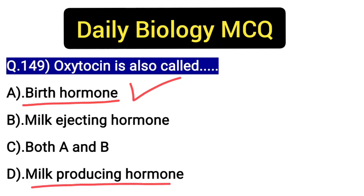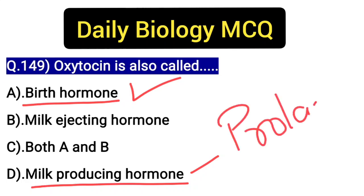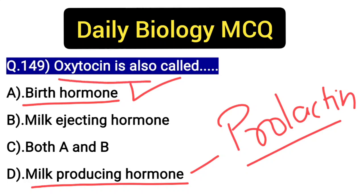If you ask about milk production or synthesis, then the answer is prolactin — prolactin makes the milk. But who ejects the milk from the outside? That is oxytocin.